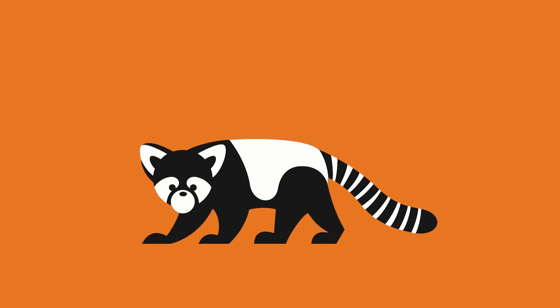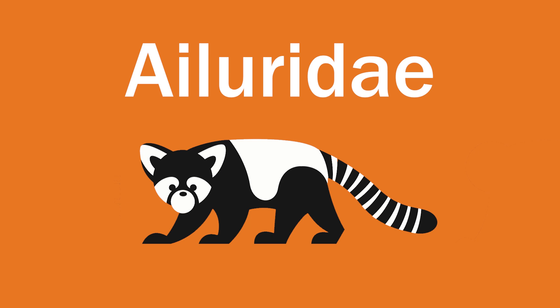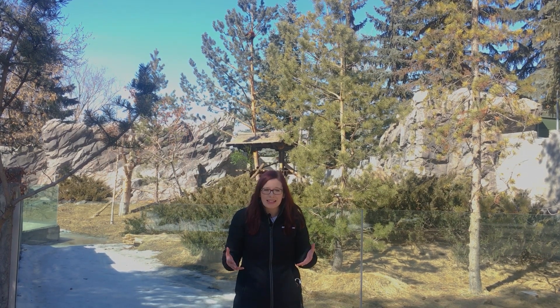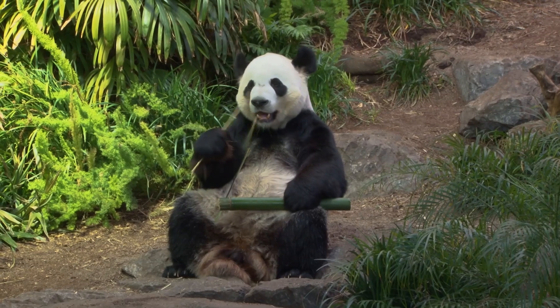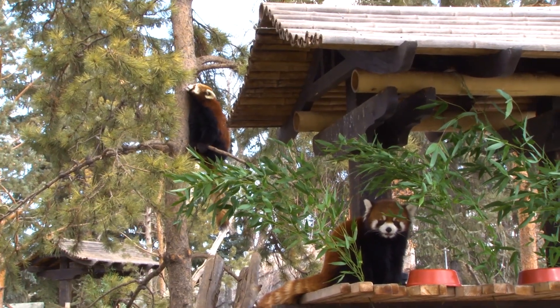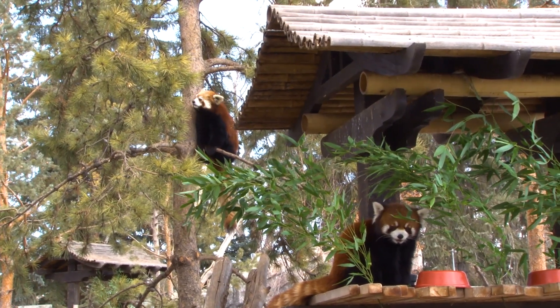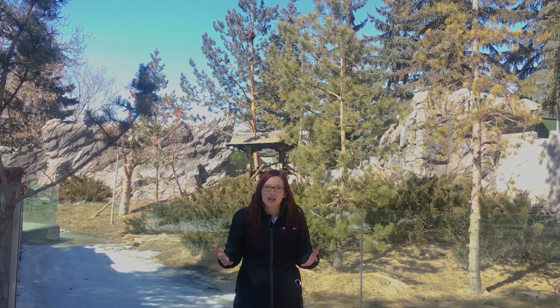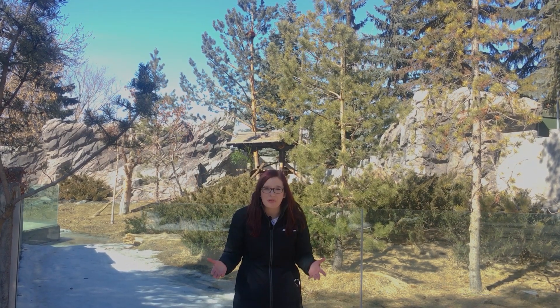Red pandas, however, are actually the only living member of their own family — the Ailuridae. The Ailuridae family is actually more closely related to the otter and weasel families, the skunk family, and the raccoon family. So even though they share features with giant pandas, it's actually because they've adapted in similar environments to eat similar diets, and so their skeletons have adapted as well. That's why they share those features even though they're not related — isn't that cool!